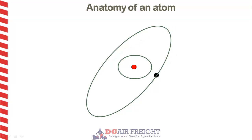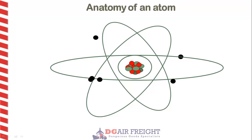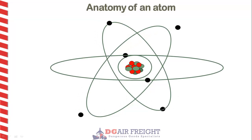An element is a substance that is made entirely from one type of atom. The number of protons determines what the element is. For example, an atom with only one proton is hydrogen, whereas an atom with six protons is carbon.